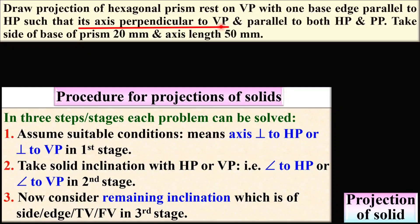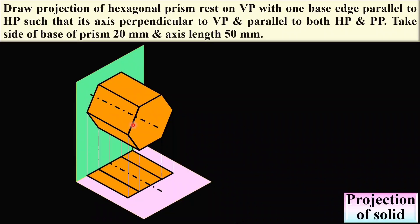Keep in mind that here the axis is perpendicular to VP as given, so you can see the base of the hexagonal prism in the front view as a true shape. Therefore, you should start with the front view for this problem. The hexagonal prism is raised on VP with one base edge parallel to HP. Here you can see the axis is perpendicular to VP, and at the same time it is parallel to HP and also parallel to PP.